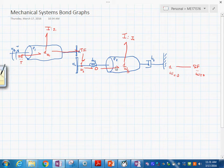this is omega 2 minus omega 3 and attached to this velocity we have this c element with value 1 over k rotation.